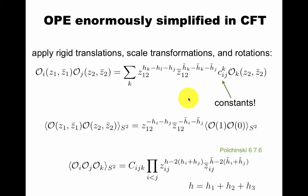The operator product expansion is enormously simplified in conformal field theory. Because you can apply rigid translations, scale transformations, and rotations to make sure that your expansion coefficients are just some given functions times some constants. This is enormously simplified compared to having some general function of the distances. In particular, for the two-point function, if you just take two operators, it's completely fixed in terms of some normalization constant by applying these symmetries, as discussed in this part of Polchinski.